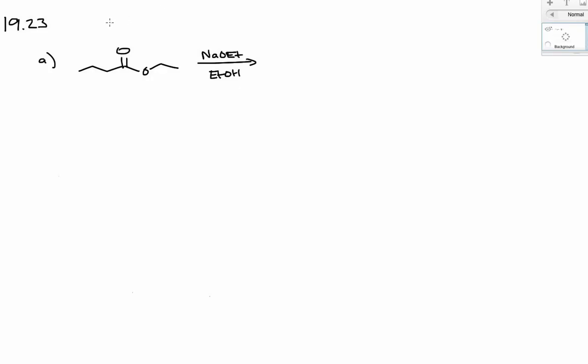In chapter 19 we're looking at the Claisen and Aldol condensations. Let's look at problem 23A in chapter 19. This is going to be an example of the Claisen condensation. In a Claisen condensation we're starting with an ester and treating that with a base and an alcoholic solvent.